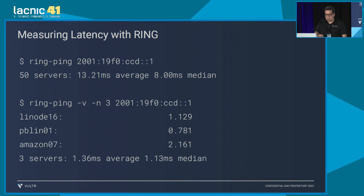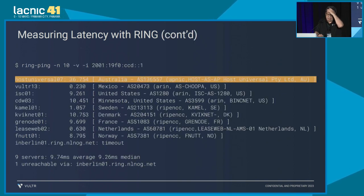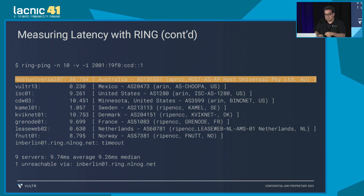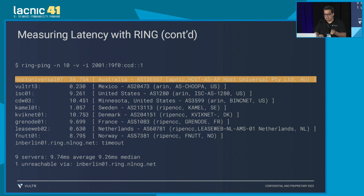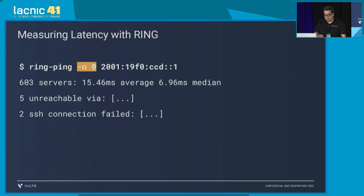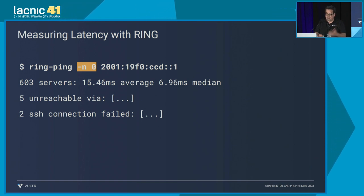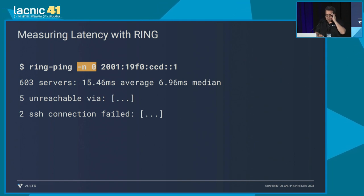If I do ring ping, I can ping from 50 servers by default, or indicate just three with minus N3, or use N10 for ten. Looking at the results — the first node in Australia shows 36 milliseconds to my anycast prefix. We have a node in Australia that should be smaller, so you can work directly with that autonomous system AS136557 and investigate why there's such a latency to the anycast prefix. Ring ping N0 takes all 603 available servers and gives average and median latency information.